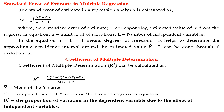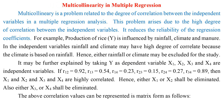Coefficient of multiple determination R² can be calculated from the regression equation, where ȳ is the mean of the y series and ŷ is the computed value. R² represents the proportion of variation in the dependent variable due to the effect of independent variables. Multicollinearity is a problem related to the high degree of correlation between independent variables in multiple regression, which reduces the reliability of regression coefficients.